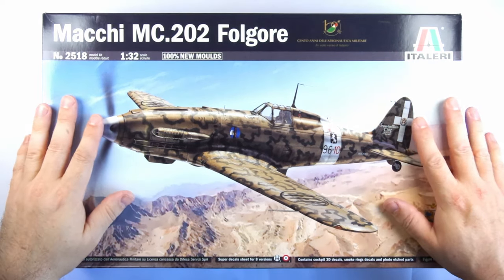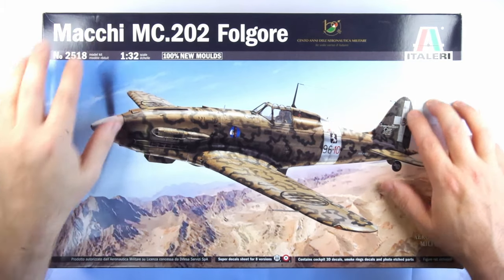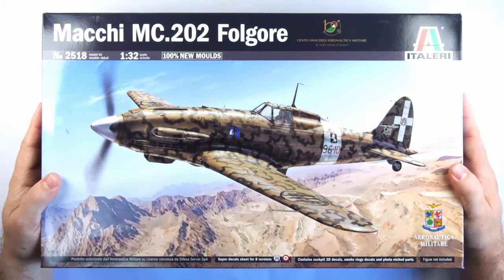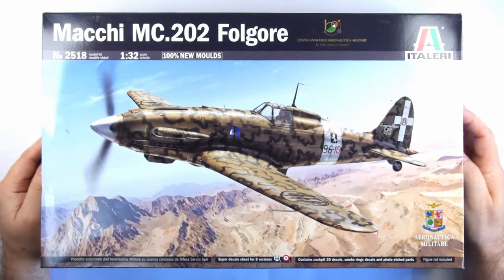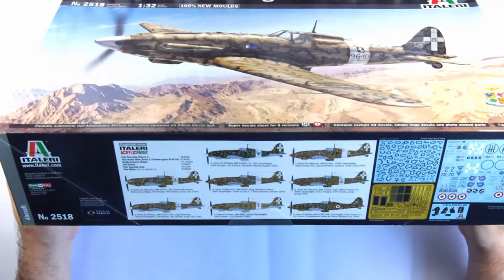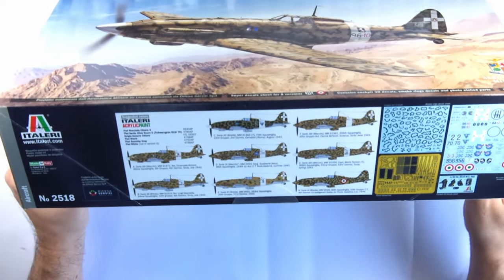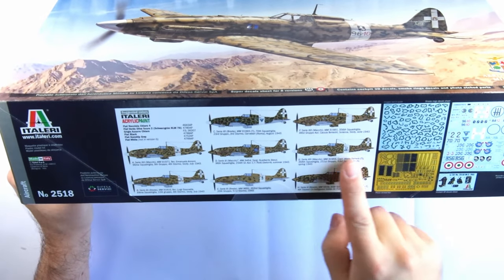The brand new 1:32 scale MC.202 Folgore, meaning Lightning or Thunderbolt. This is a kit I've been looking forward to since Italeri's release announcement at the start of the year, so I'm hoping it doesn't disappoint.